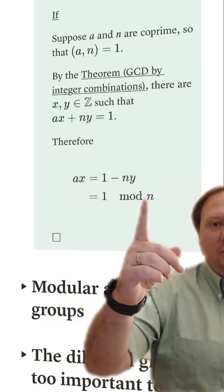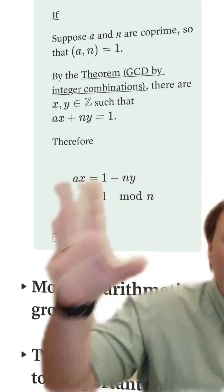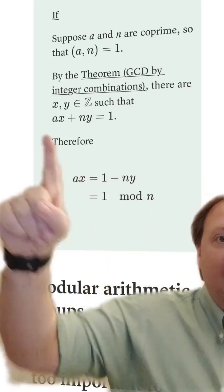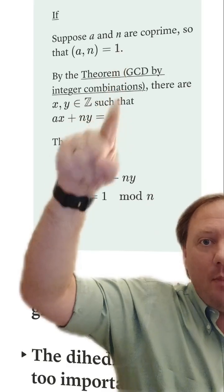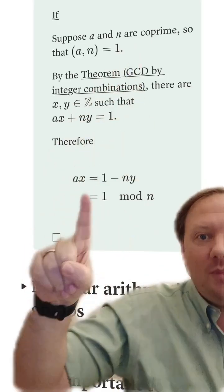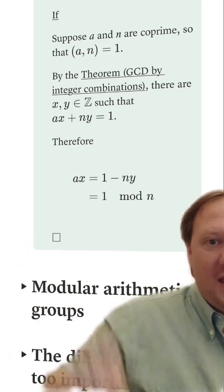Move ny over to the other side. That's the same thing as one mod n. And now we see that x, which is guaranteed by the integer combination theorem, is precisely the multiplicative inverse of a.